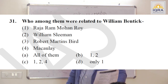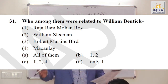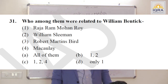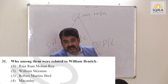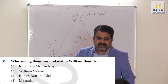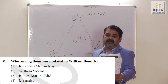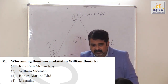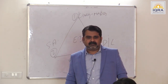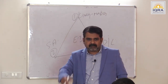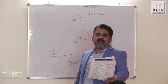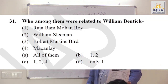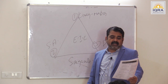Who was related to William Bentinck? Raja Ram Mohan Roy — social reformer who played an important role in the abolition of Sati. William Sleeman — officer in charge against Thugs. Robert Mertins Bird — land revenue reforms of the North Western Province, introduced Patta and Kabuliyat.